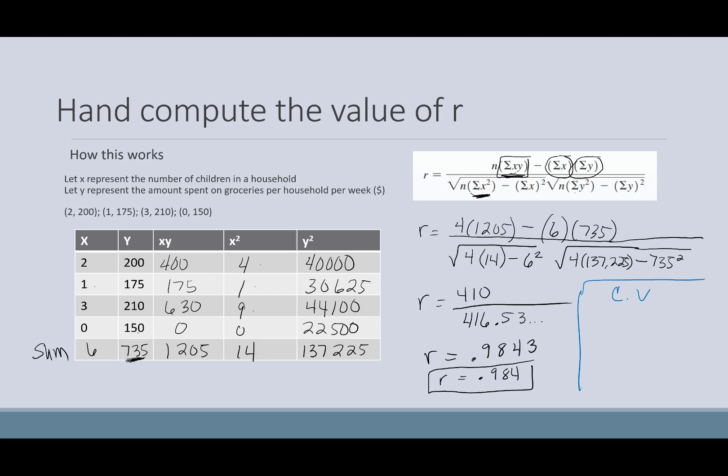So when I look up my critical values, I'm going to go to n equals four. And then if my alpha for the problem is 0.05, then my critical value is 0.950. If my alpha is equal to 0.01, then my critical value is 0.990.